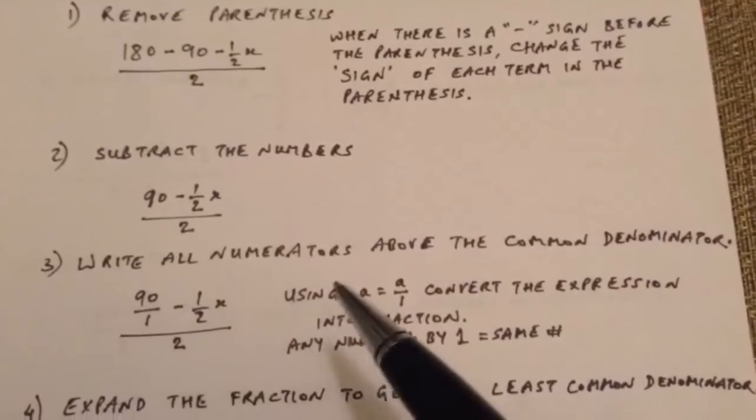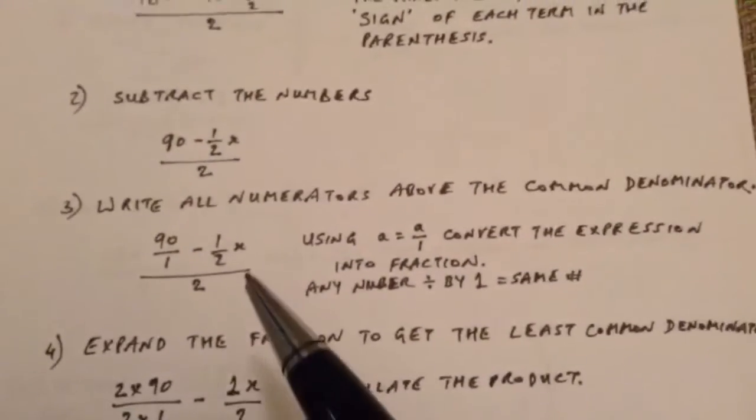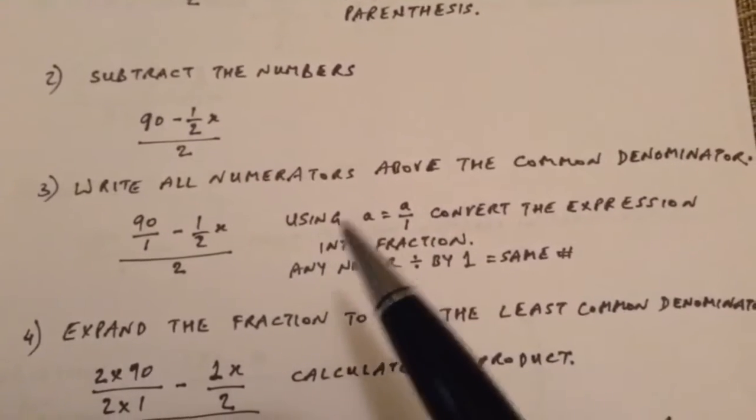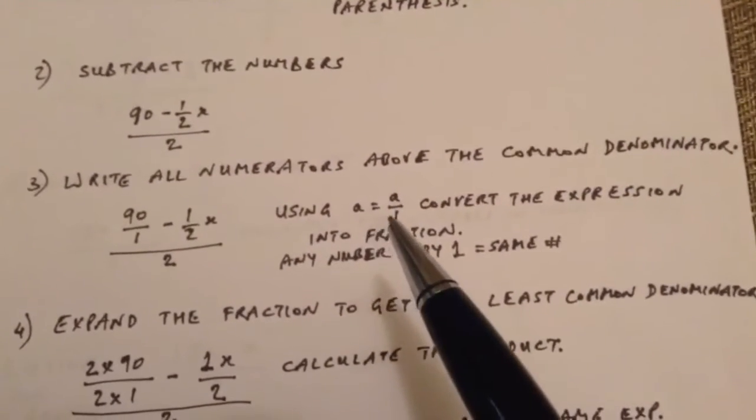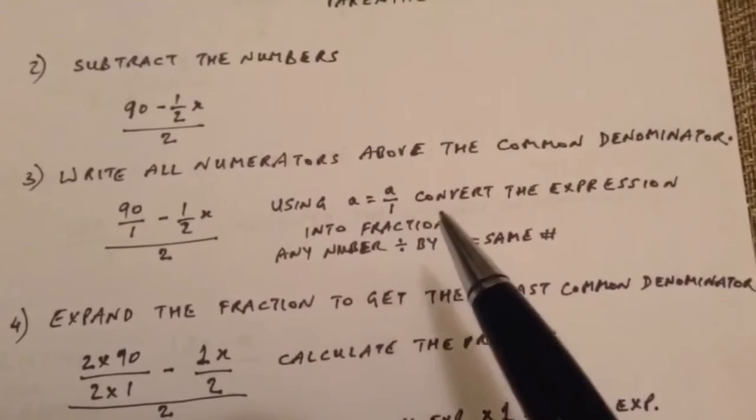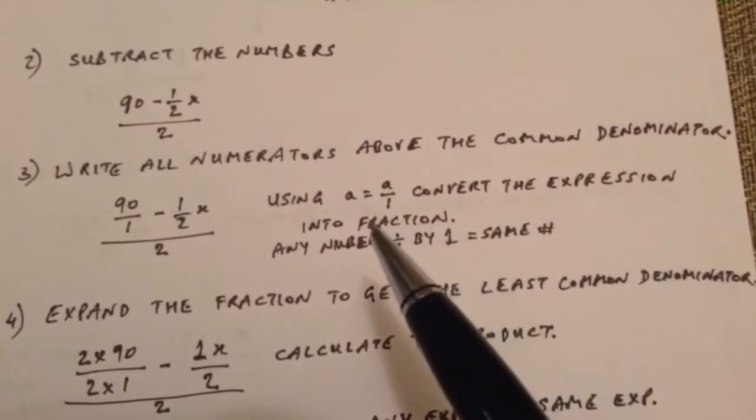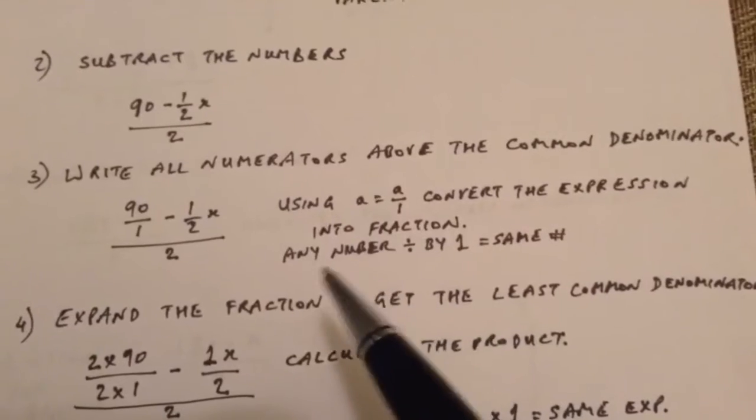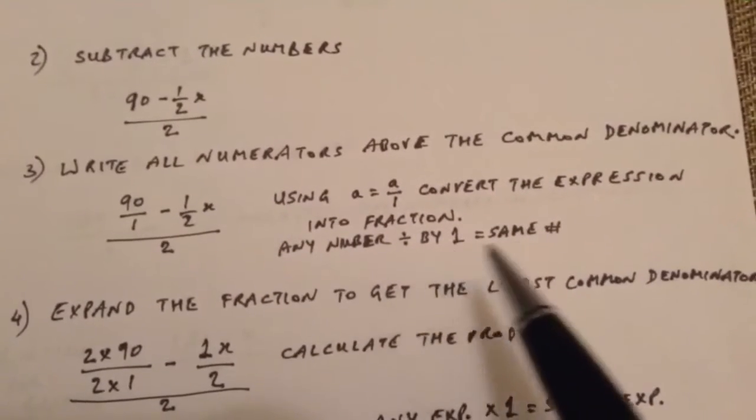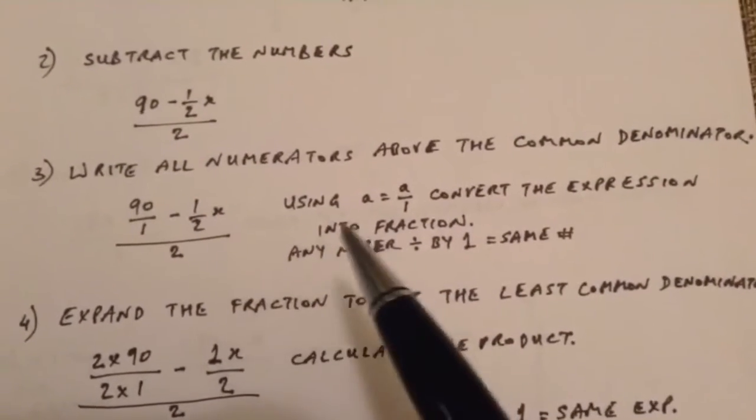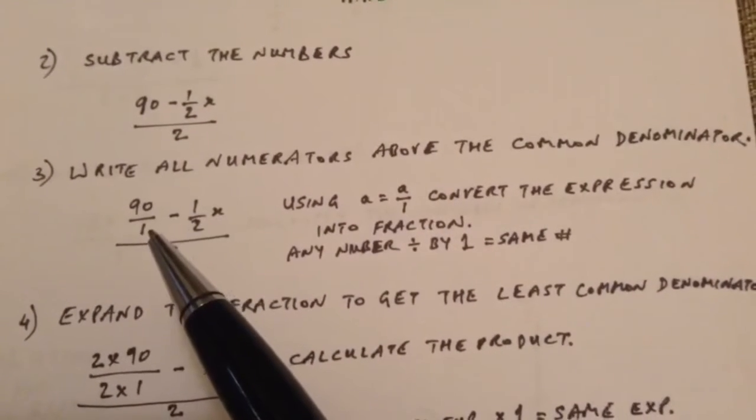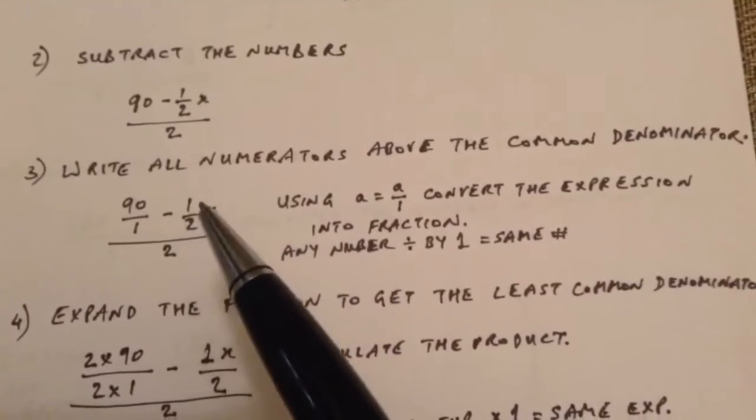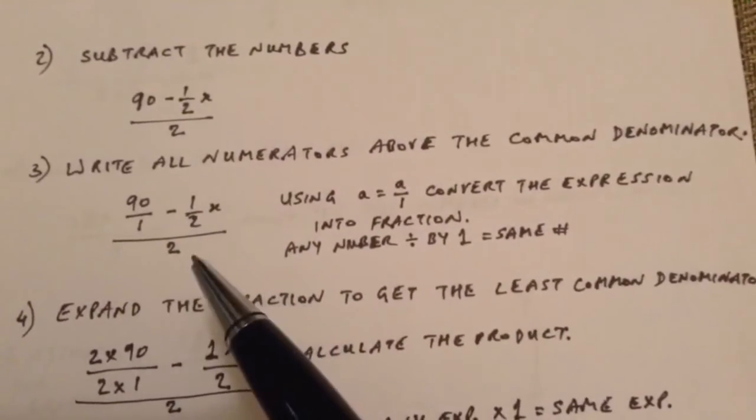Now, we write all the numerators above the common denominator. And we use the mathematical formula or the understanding A equals A over 1 to convert the expression into a fraction. So any number divided by 1 is the same number. So here we have 90, so we can just say 90 over 1. It means the same thing. Minus one-half x, the whole thing divided by 2.